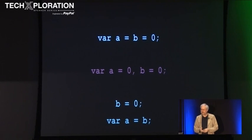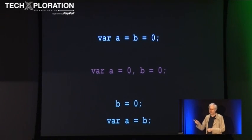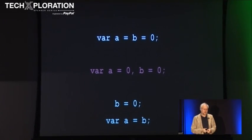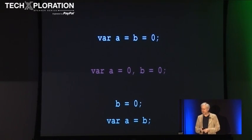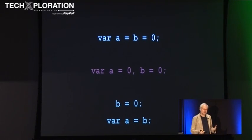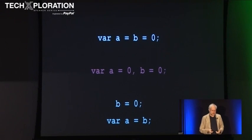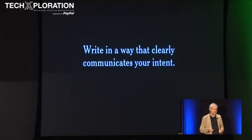Here's something I see all the time. The first statement looks like it means what's in red, but what it actually means is what's in green. The author thought he was defining two local variables, but one of them is actually a global variable — because of implicit global variables in JavaScript. Again, this is a situation where when you see it, you have to ask: did he know what he's doing? My advice is figure out which of these you mean and write that instead. Write in a way that clearly communicates your intent.